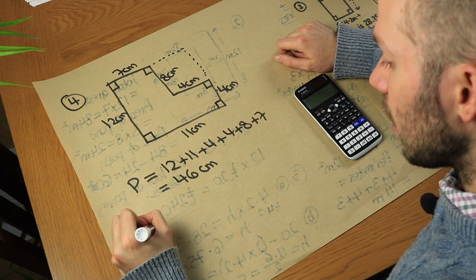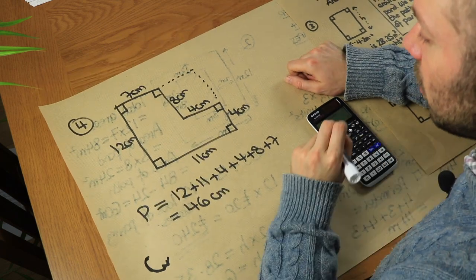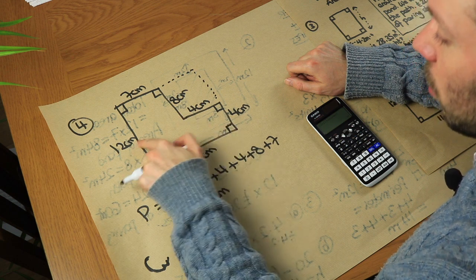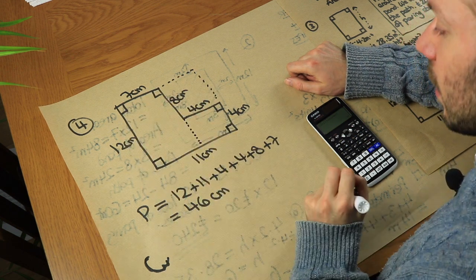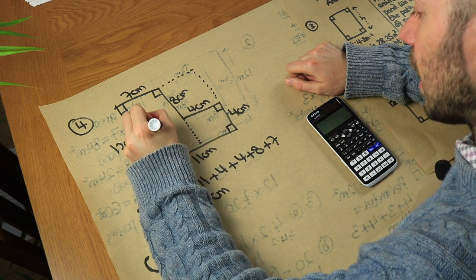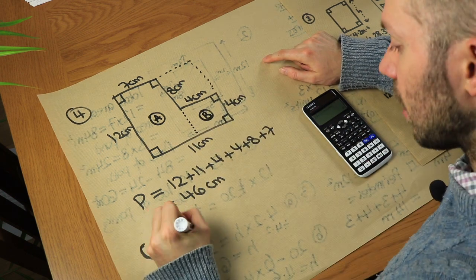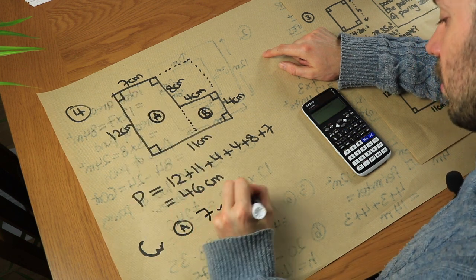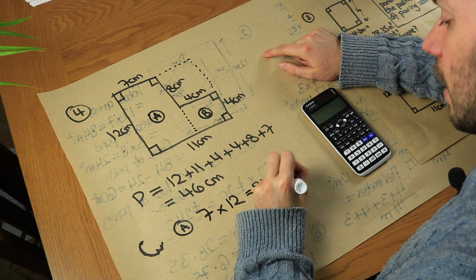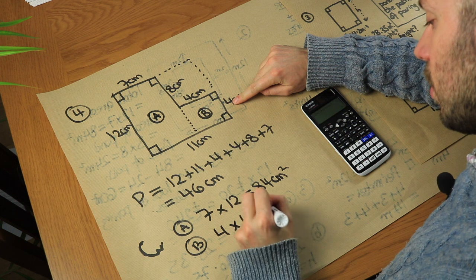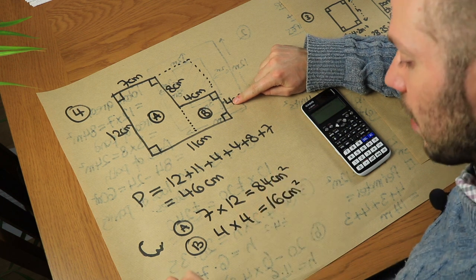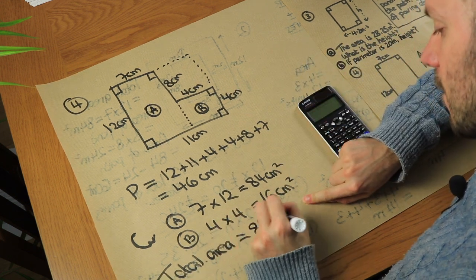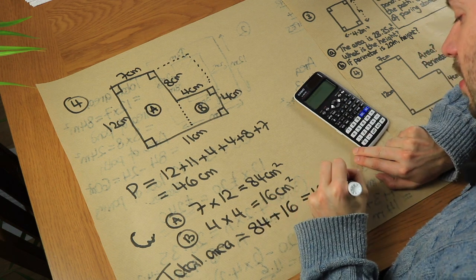To find the area, we split the rectilinear shape into two rectangles. I'll label them A and B. The area of A is 7 times 12, which is 84 centimeters squared. The area of B is 4 times 4, which is 16 centimeters squared. The total area is therefore 84 plus 16, which is 100 centimeters squared — a nice round number.